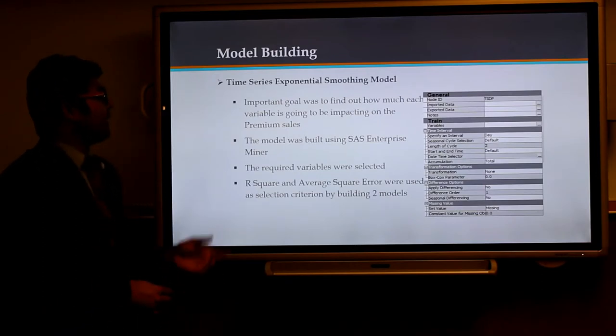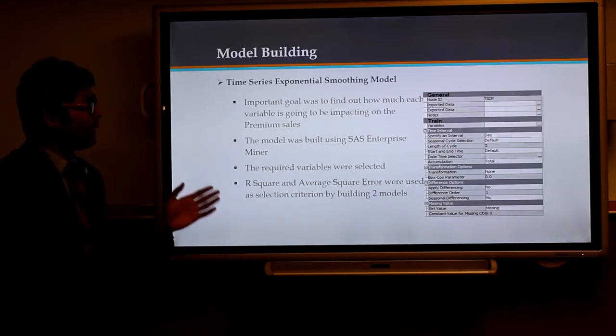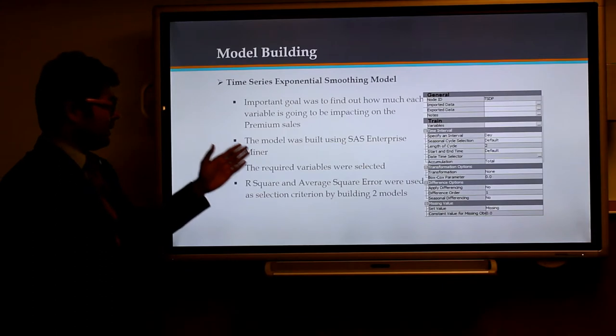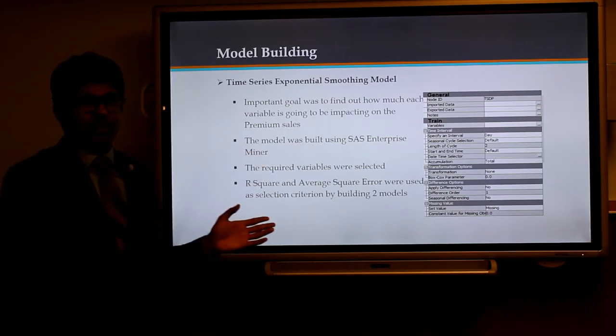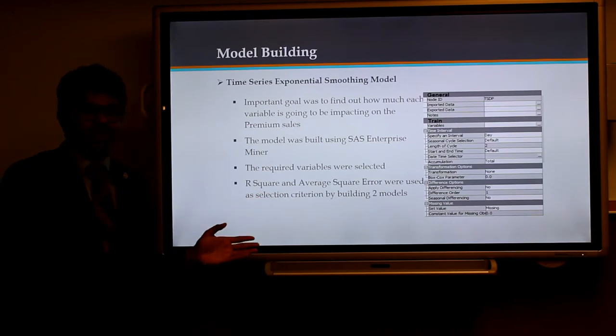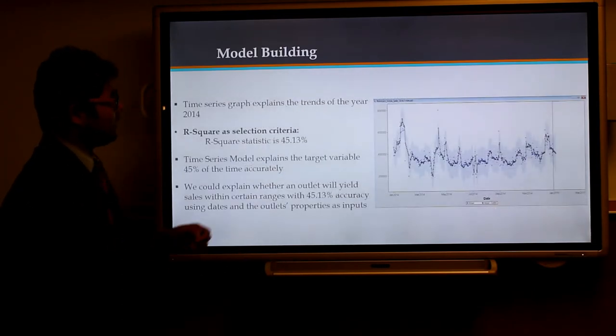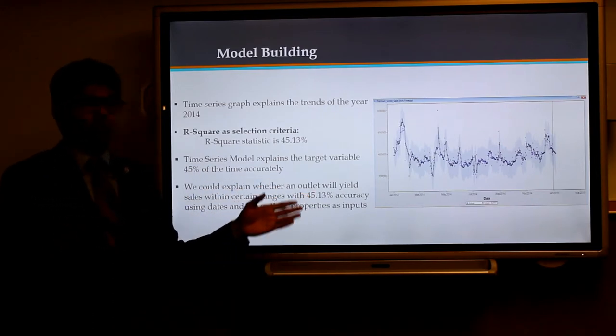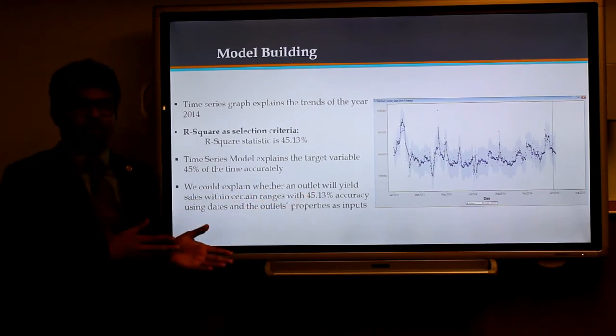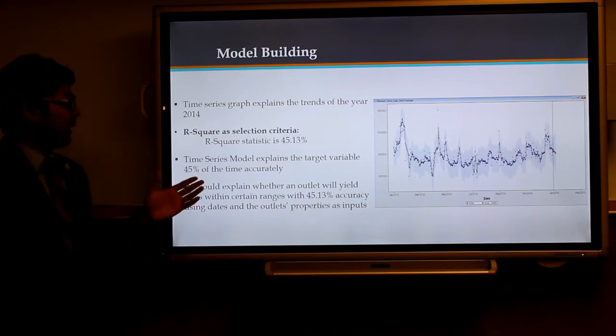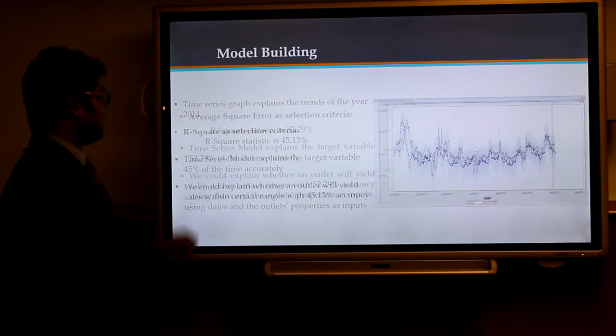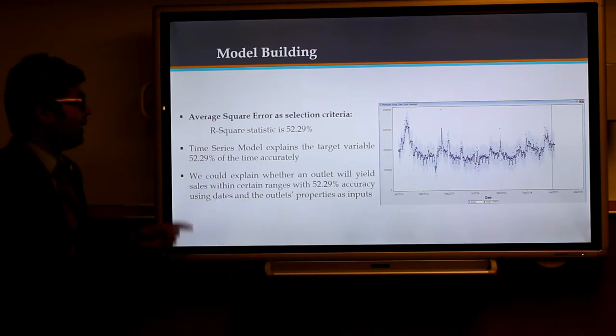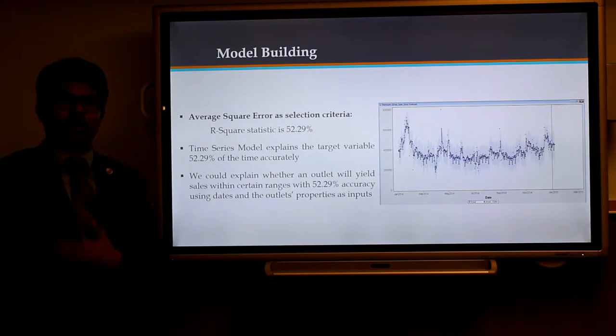The third model is the time series exponential smoothing model. In this model, we are comparing all the target variables with the timeline. The model was run in SAS Enterprise Miner and we selected R-square and average square error for our selection criteria. This graph explains with R-square as the selection criteria. R-square in this model gave us a value of 45.13%, meaning this model predicts 45% of the time the correct value of the target variable. When taking the average square error as selection criteria, it gives us 52.29 times the correct output variable. The next part is model assessment, which is going to be conducted by Mr. Ravi.